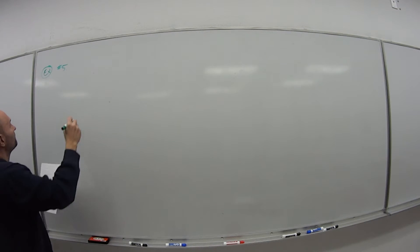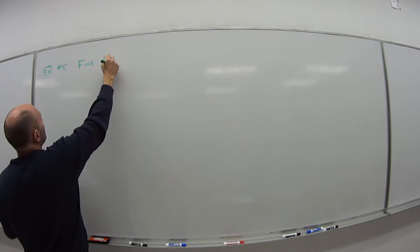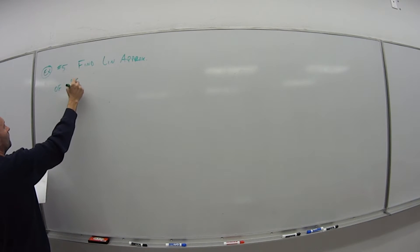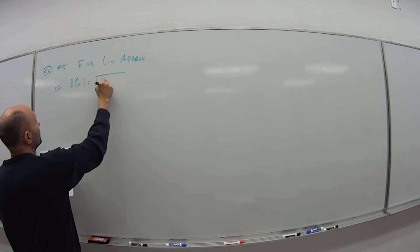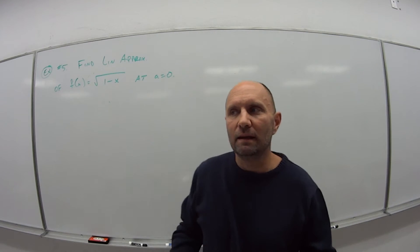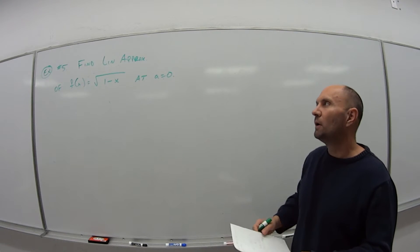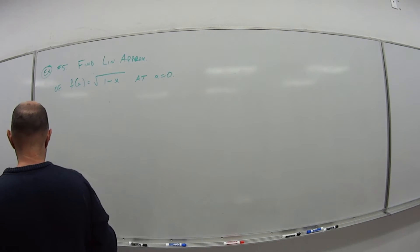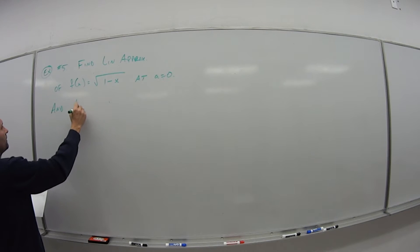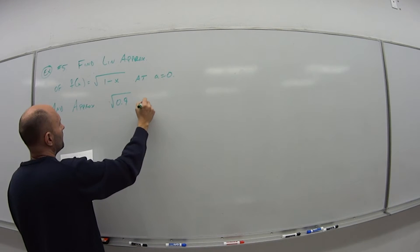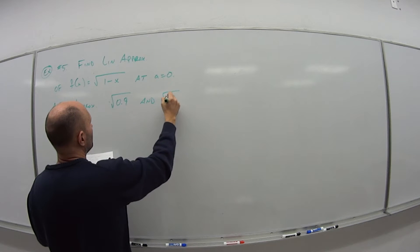So the example we're going to do here is number 5 in the book. And it says, find the linear approximation of f of x is equal to the square root of 1 minus x at a is equal to 0. So this is similar like what we did in video 1. So if you have the homework, if you have an exam, this will probably be the question you're given. You're given some function, asked to find the linear approximation, and then approximate. So once we have that approximation, we want to approximate square root of 0.9 and square root of 0.99.